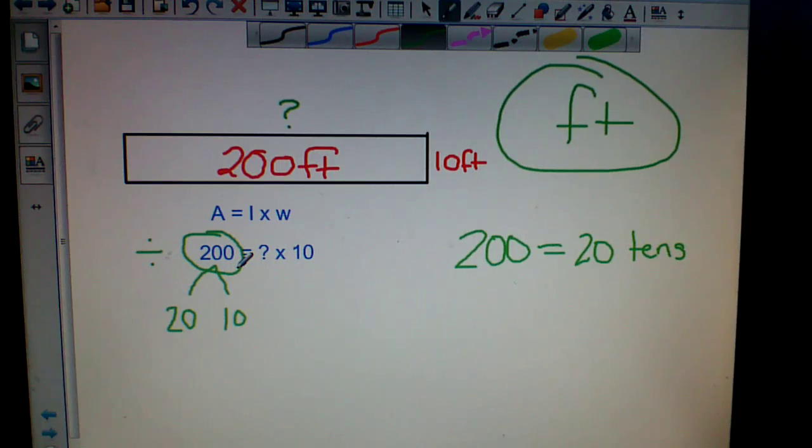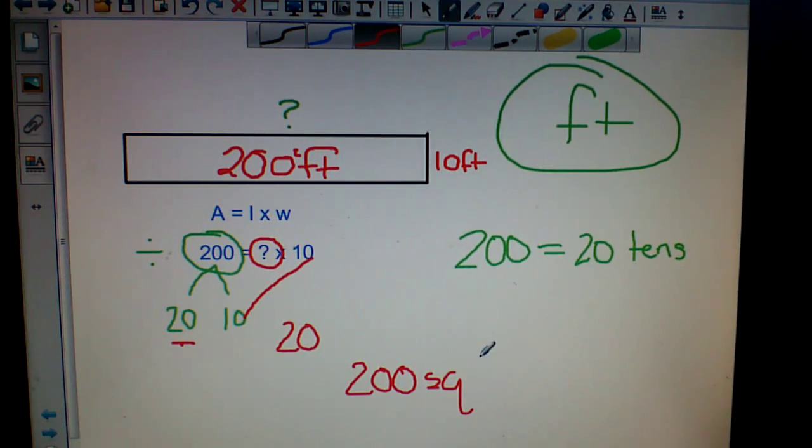Okay, so if we have that information, we can just look at our problem and notice something. Here is a 10 and here is a 10. We need to know what this number is, so what's left here? The 20, correct. So 200 square feet equals 20 feet times 10 feet. So our missing number is 20.